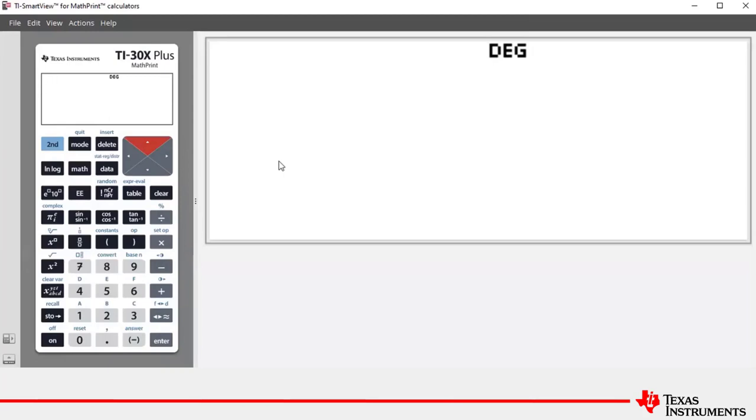To access the complex menu, we can press second and then that multitap key, and that will allow us to see the various complex number tools and commands in that menu.